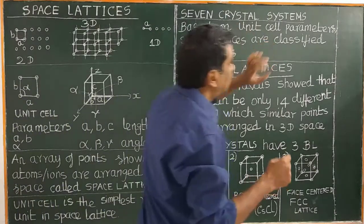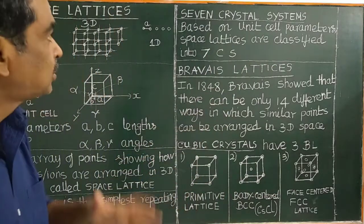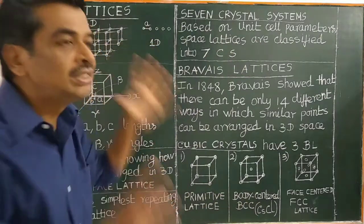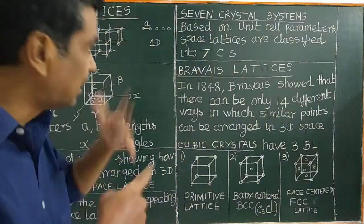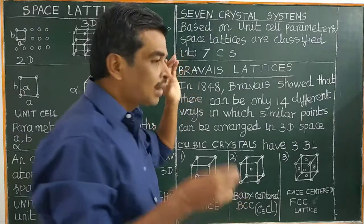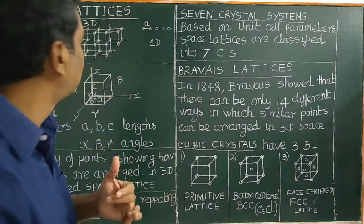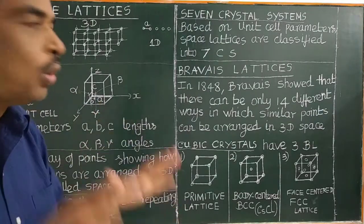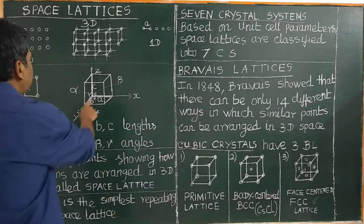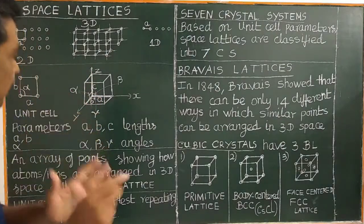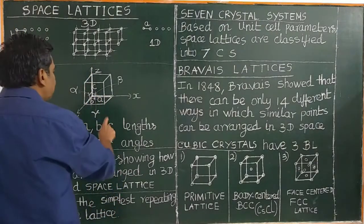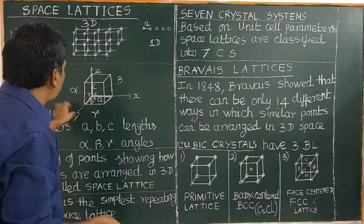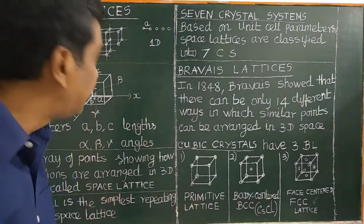Based on unit cell parameters, the three-dimensional space lattices are classified into seven crystal systems. The cubic crystal system has a equal to b equal to c, and alpha equal to beta equal to gamma equal to 90 degrees — all lengths and angles are equal.